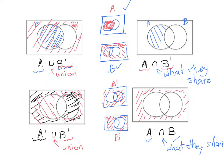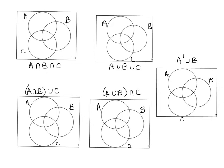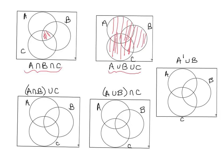Now we throw a third circle in and use three-circle Venn diagrams. A intersect B intersect C is what all three sets have in common — the center region. A union B union C is everything in all three circles combined. Unions are much easier, so we'll do those first and save the intersections for last.